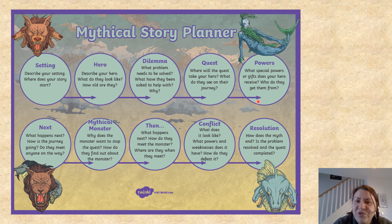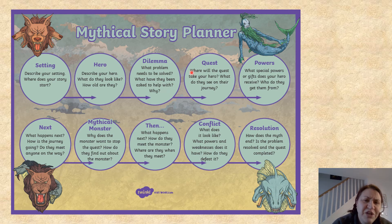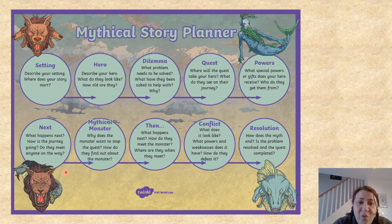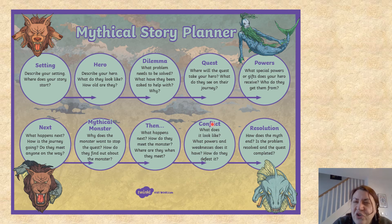What special powers or gifts does your hero receive? That's the object — I would have that given to them before they set off on the quest. Then what happens next? How's the journey going? Do they meet anyone on the way? Where do they meet the mythical monster? Then the conflict: what does the monster look like, the powers and weaknesses it has, how are they going to defeat it? And then the resolution at the end.